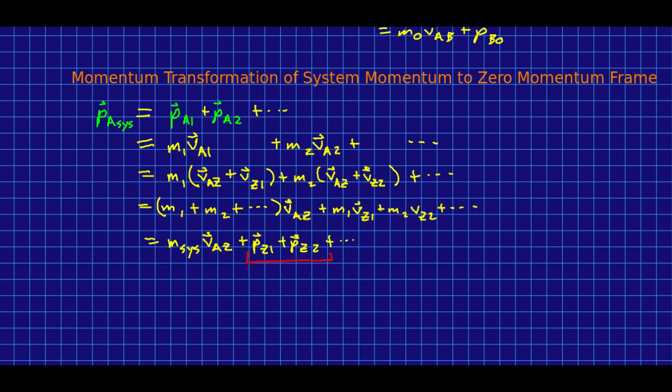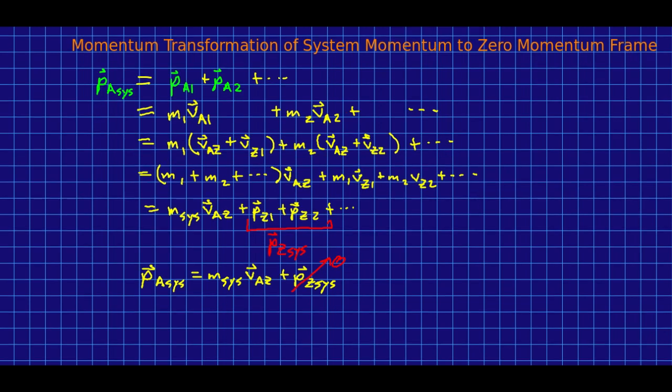And these remaining terms are just the individual momenta of the objects in our zero momentum frame. But notice, that is just the sum of those momentums. And so, all of this is just the momentum of the system in the zero momentum frame. So, what we've got is this. But look, by definition, the momentum in the Z frame is zero.